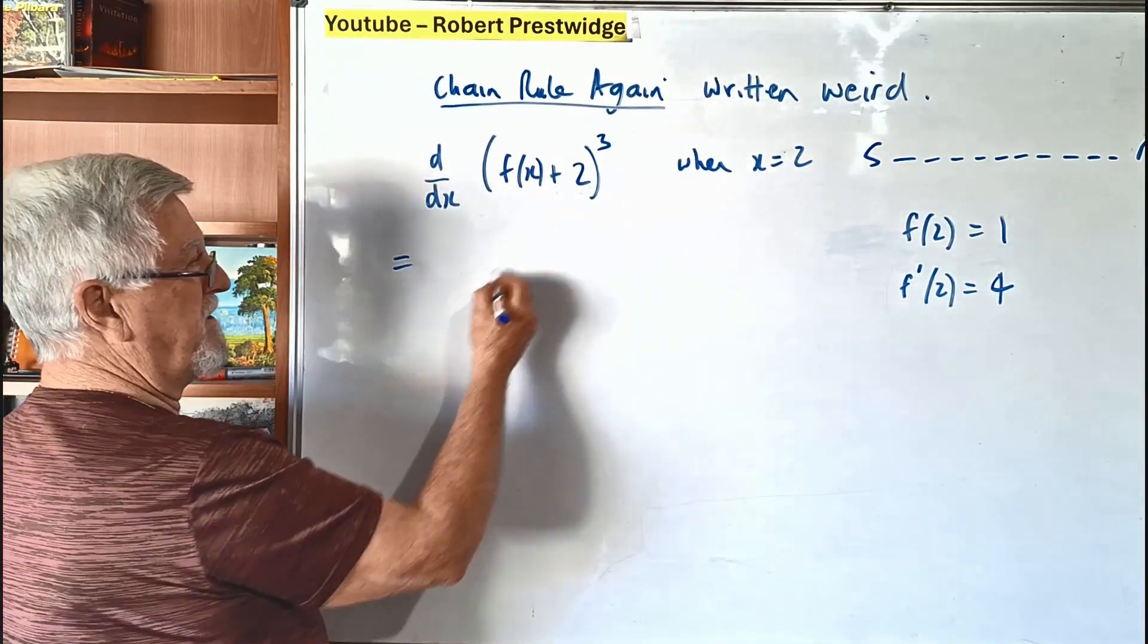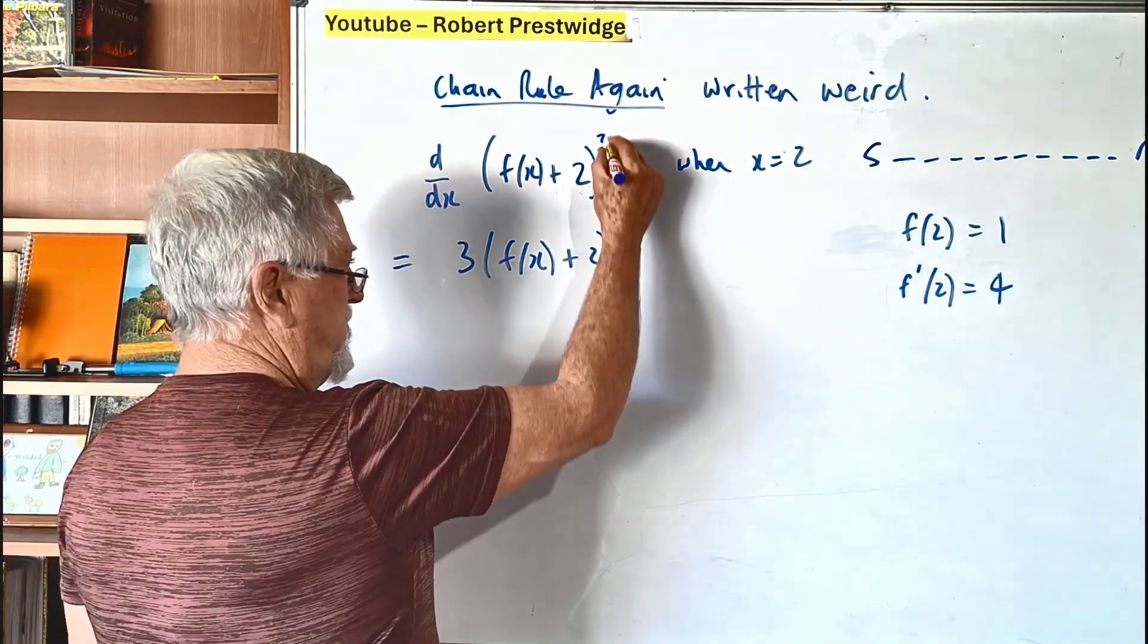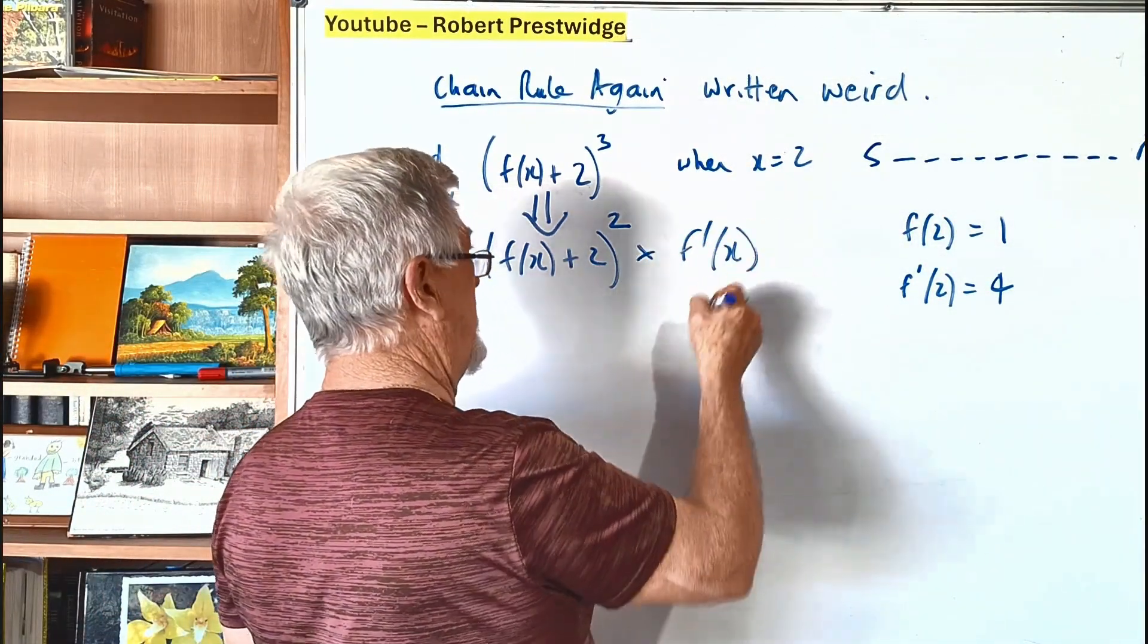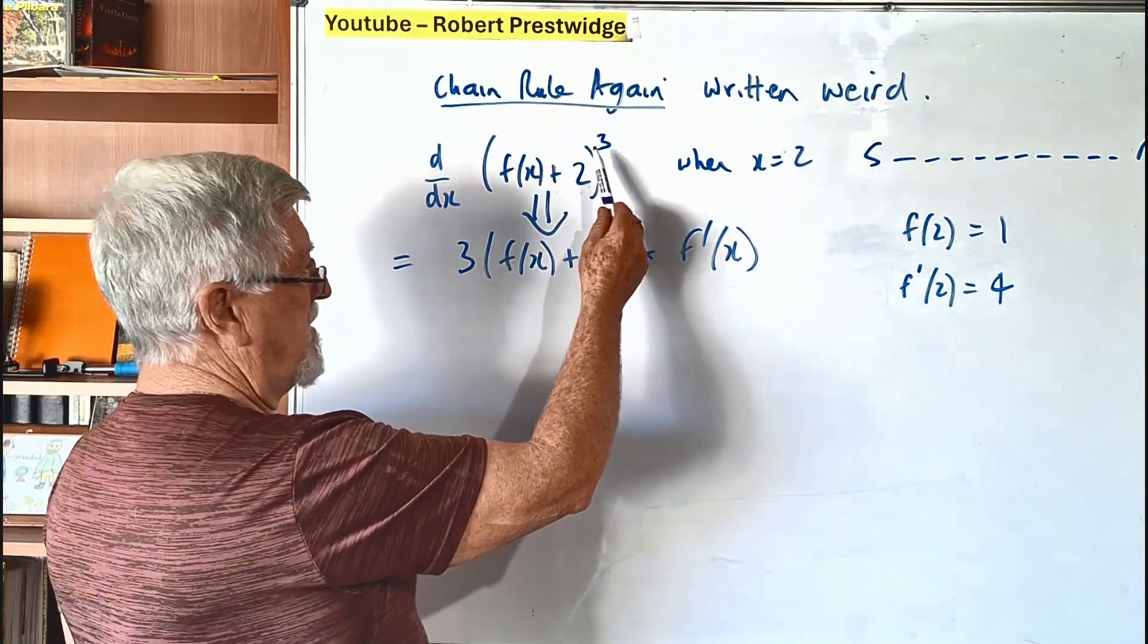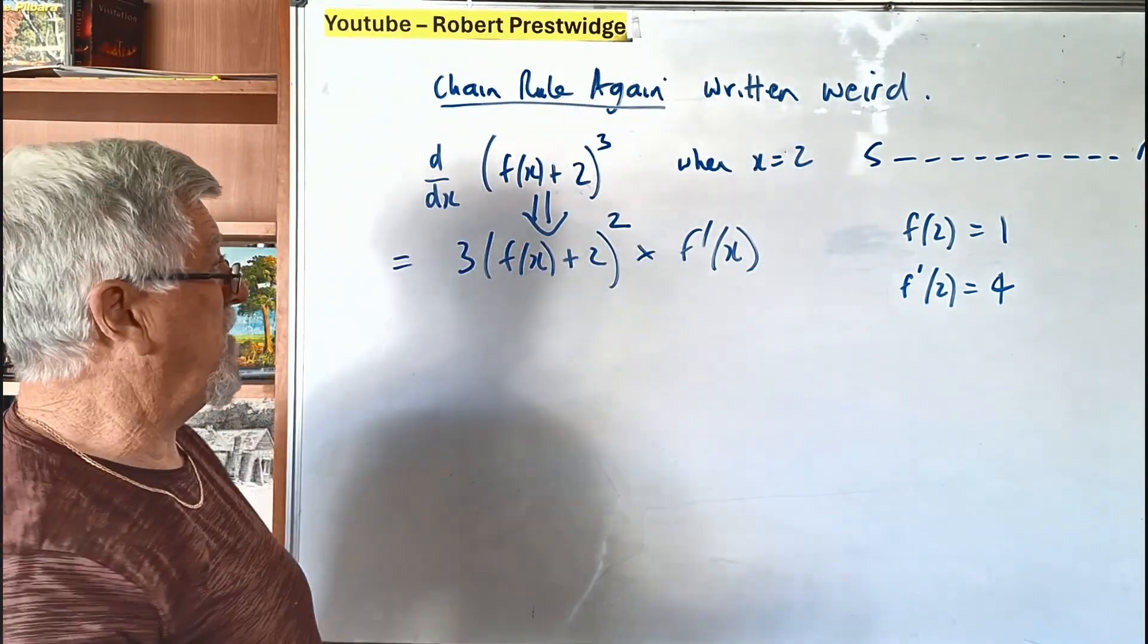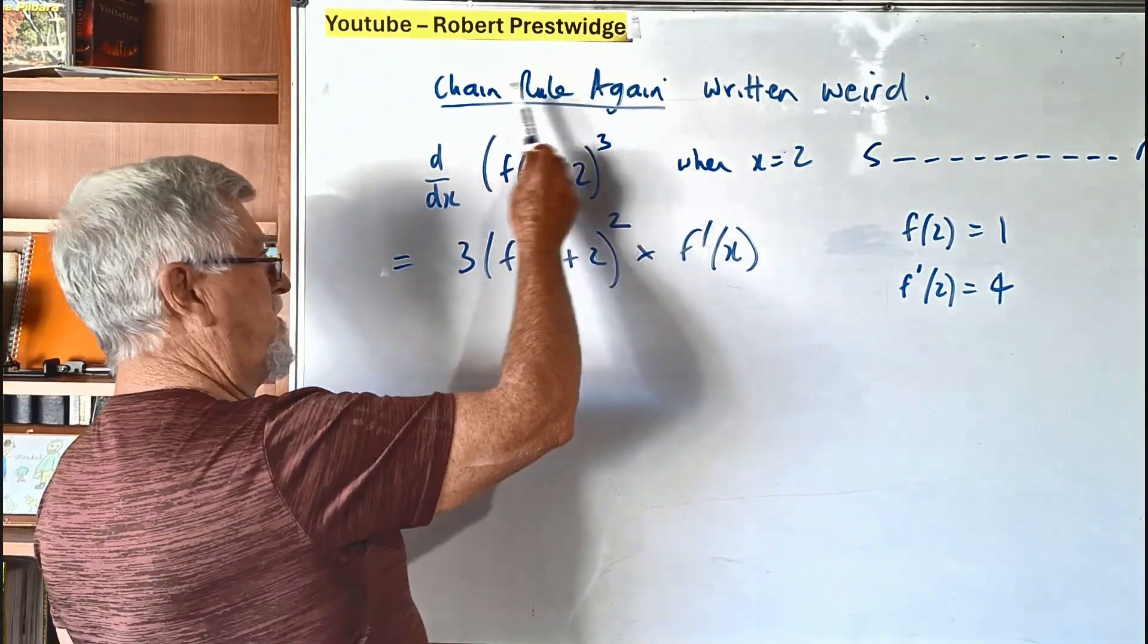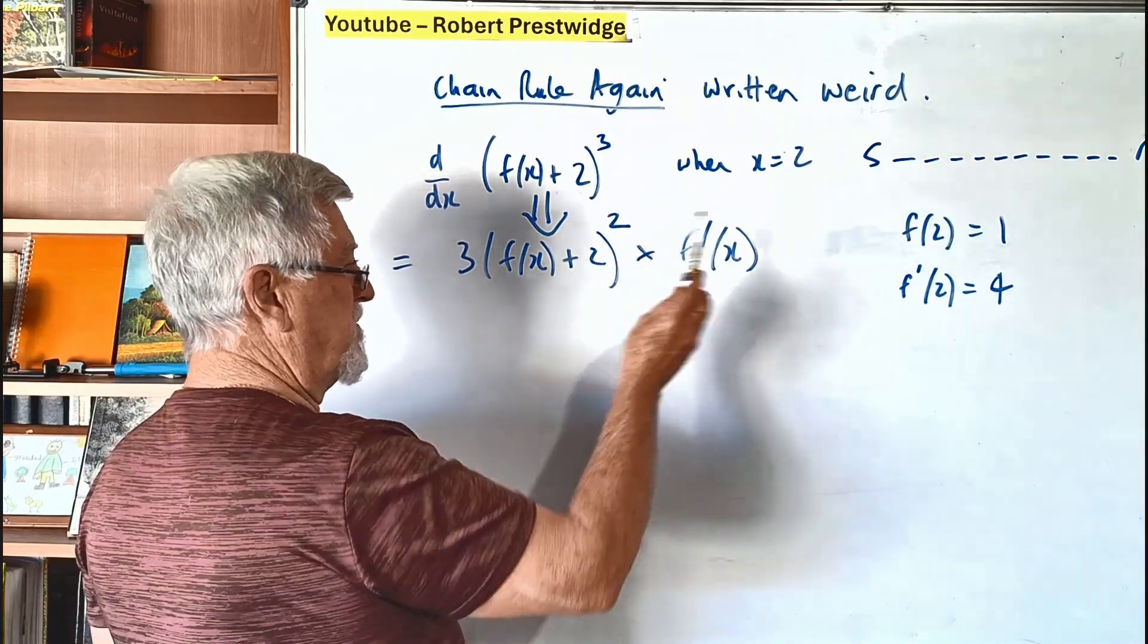We're going to differentiate that. How do you differentiate that? The 3 goes to the front and the 3 becomes the 2. The inside stays the same. And we times by the derivative of the inside. So my goodness, there it is. So it doesn't matter if I had this written as over x cubed or square root or cube root or anything. It could say sine in here. It wouldn't matter what it is. The same pattern applies. A bracket with the power is a chain rule. 3 to the front, leave the inside the same, decrease the power by 1, times the derivative of the inside.